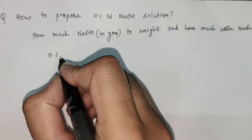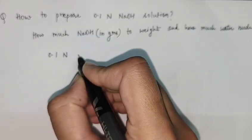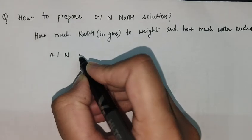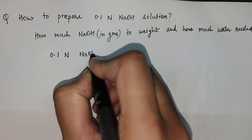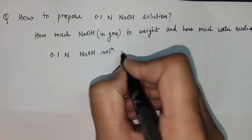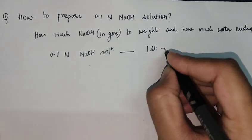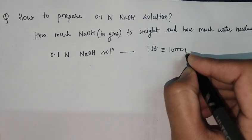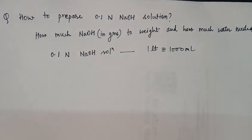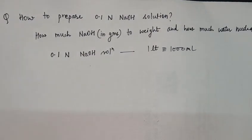We need to prepare 0.1 Normal NaOH solution with a volume of 1 liter, which is 1000 milliliters. So what we are going to do is first see the formula of normality.